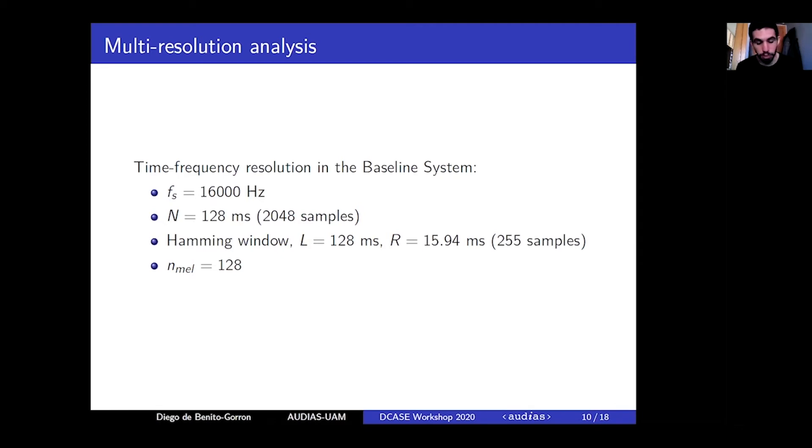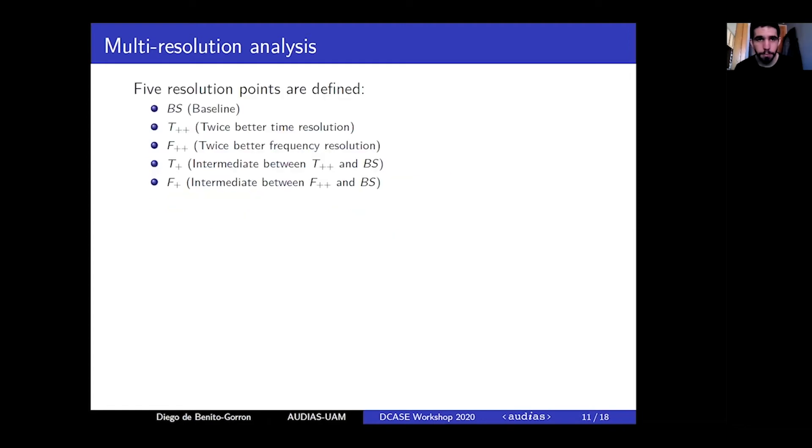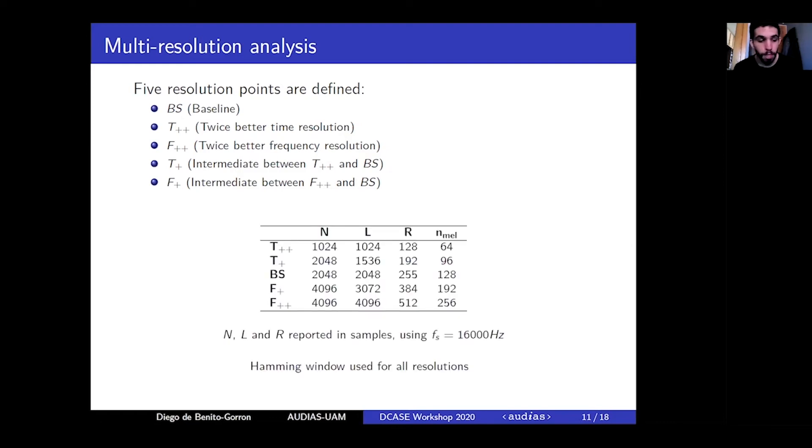These are the parameters of the time frequency resolution point used in the baseline system. We will keep the sample frequency and the Hamming window while varying the rest of the parameters to define new resolution points. Five resolution points are defined. The first one is the baseline resolution point. Then we define two new points, one with twice better time resolution than the baseline, and another one with twice better frequency resolution than the baseline. Finally, two additional resolution points are defined as the intermediate between the previous two points and the baseline resolution. The table shows the configuration of parameters for each resolution point.